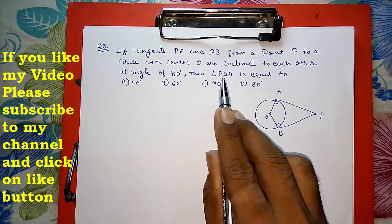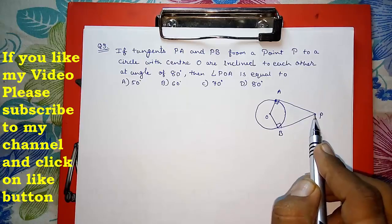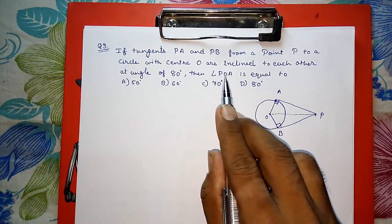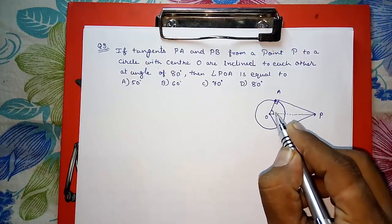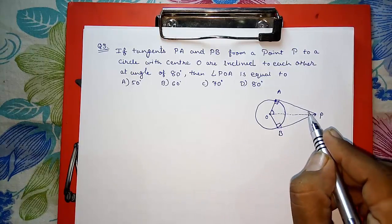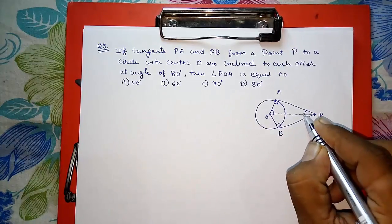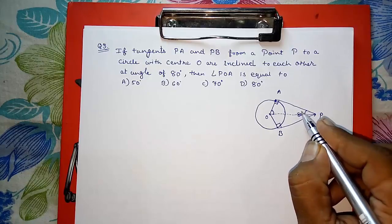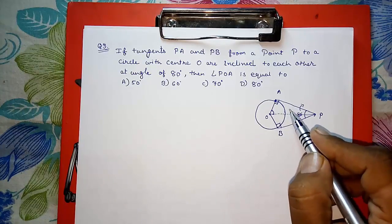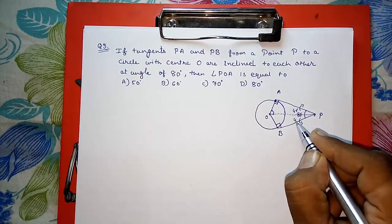We need to find angle POA. We join a line from P to O. By Theorem 10.2, the two triangles OAP and OBP are congruent. The angle between the two tangents is 80 degrees, so the line PO bisects angle APB, giving angle APO = angle BPO = 40 degrees each.